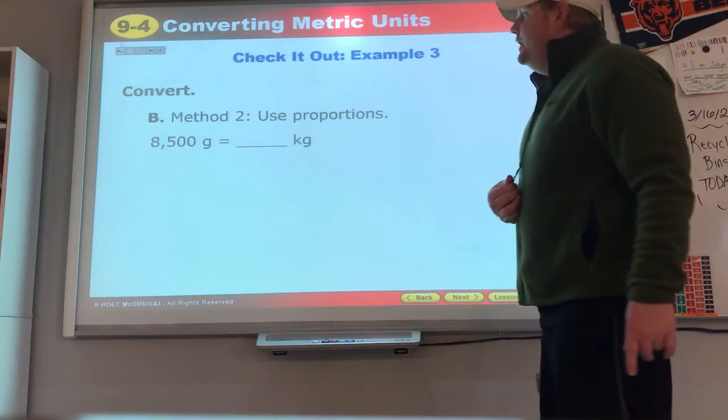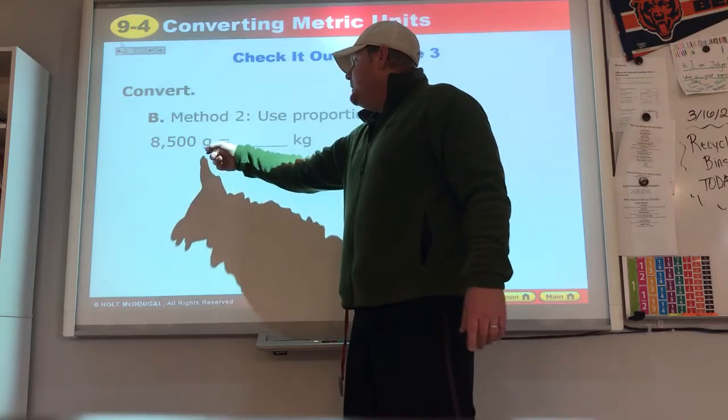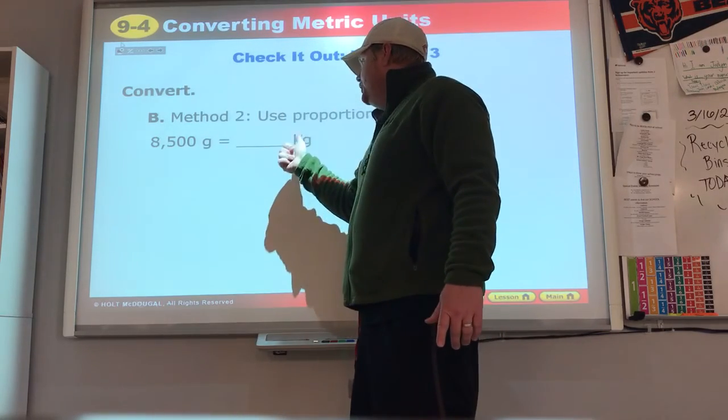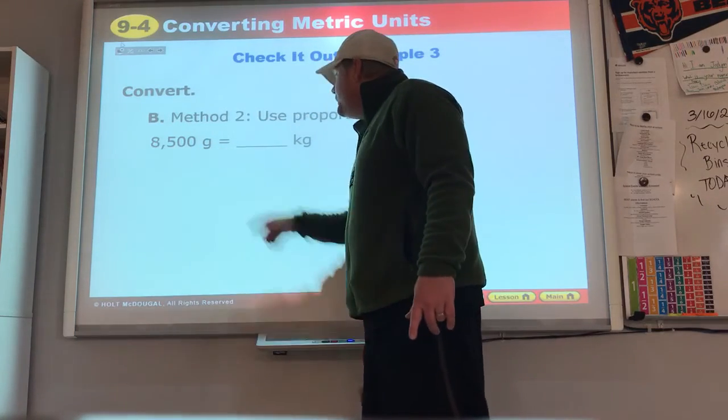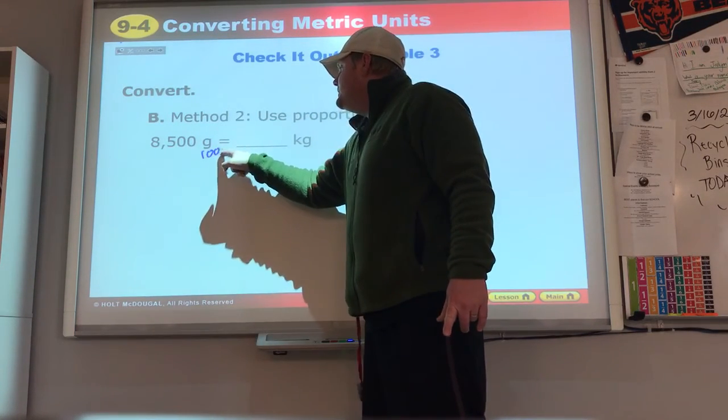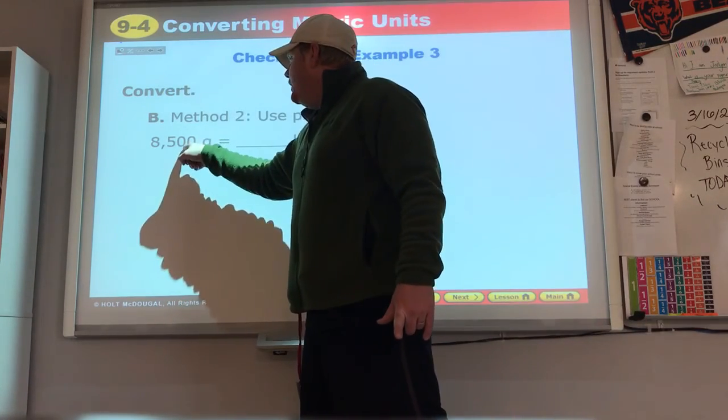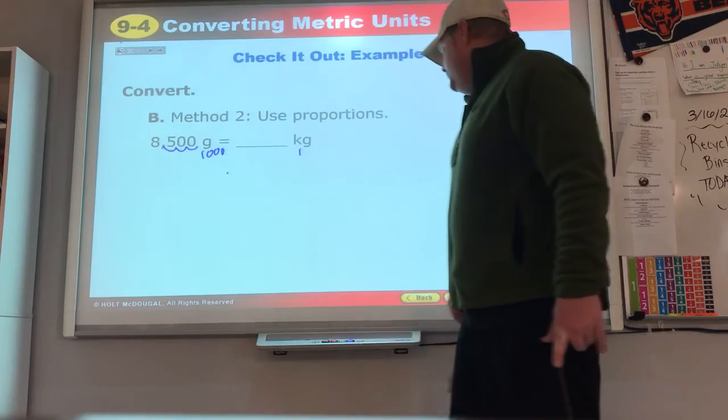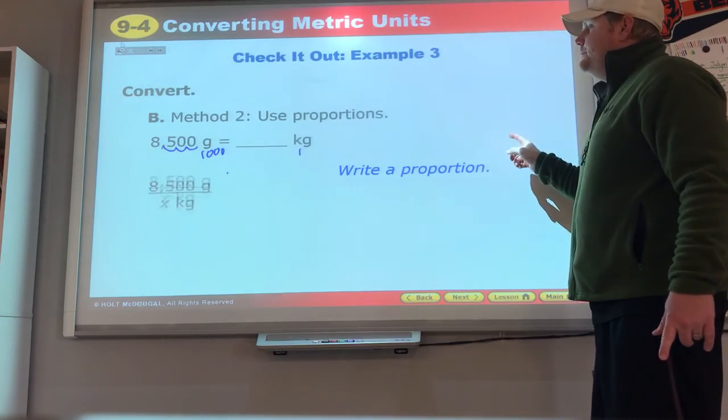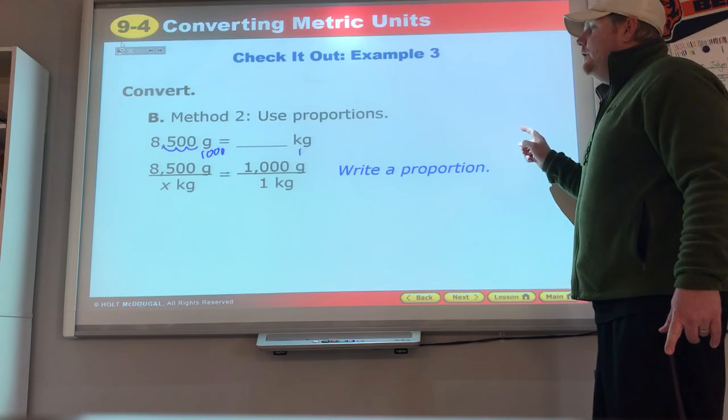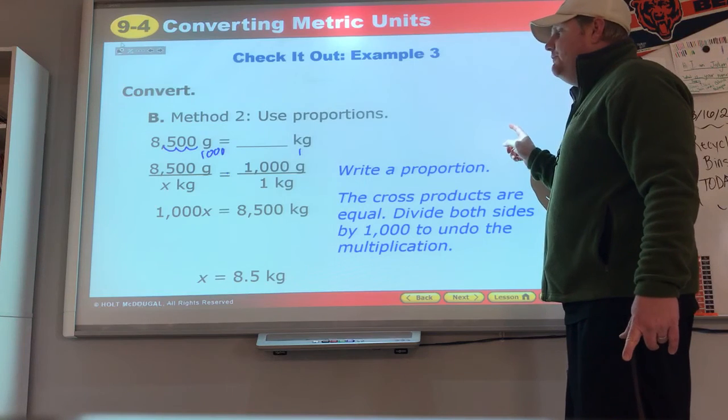8,500 grams. Well, 8,500 grams, we're going from something small to something bigger, division. 1,000 of these equals one of these, so we divide by a thousand. Decimal is right here, one and two and three, 8.5. They do their cross products, divide by a thousand, and you get 8.5.